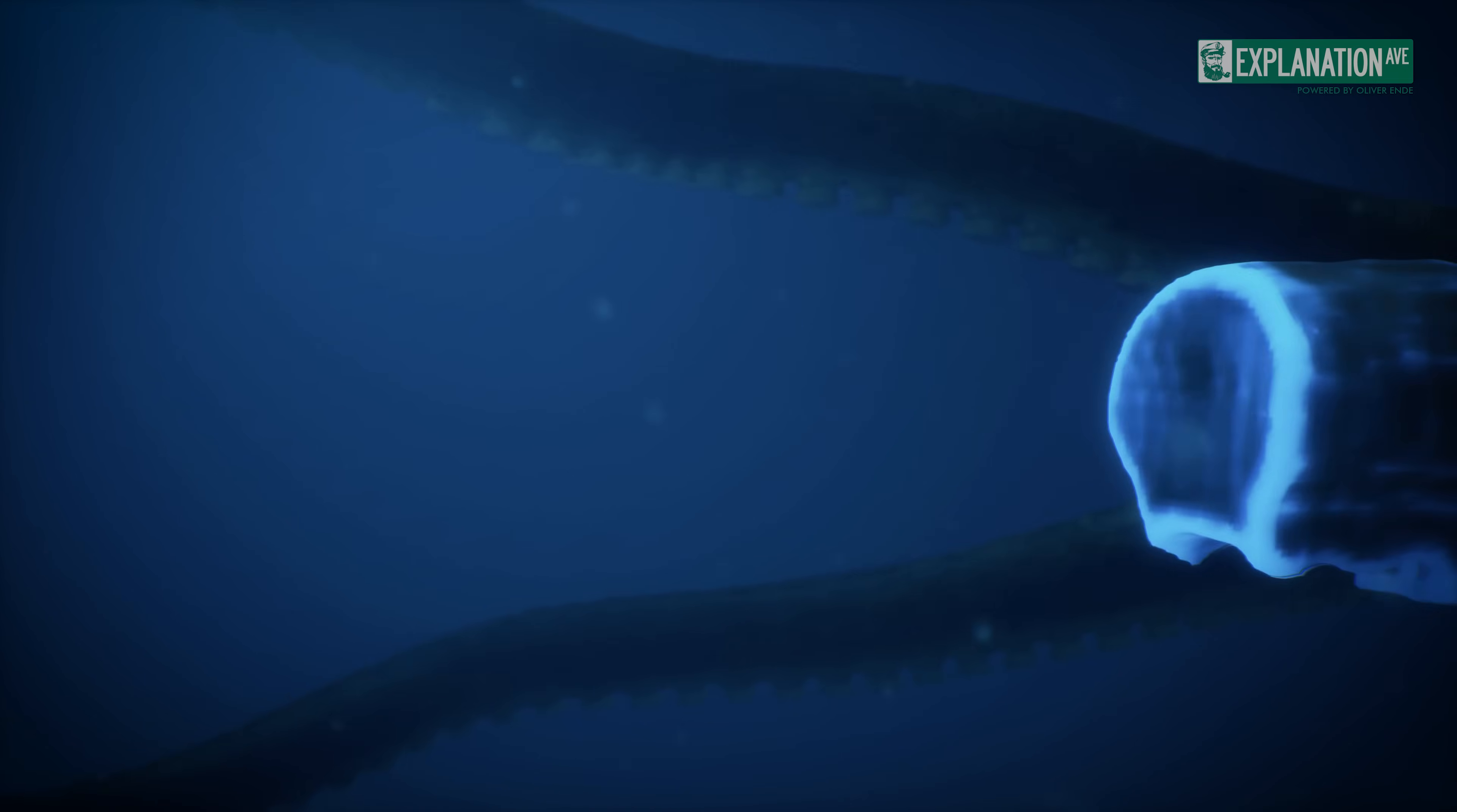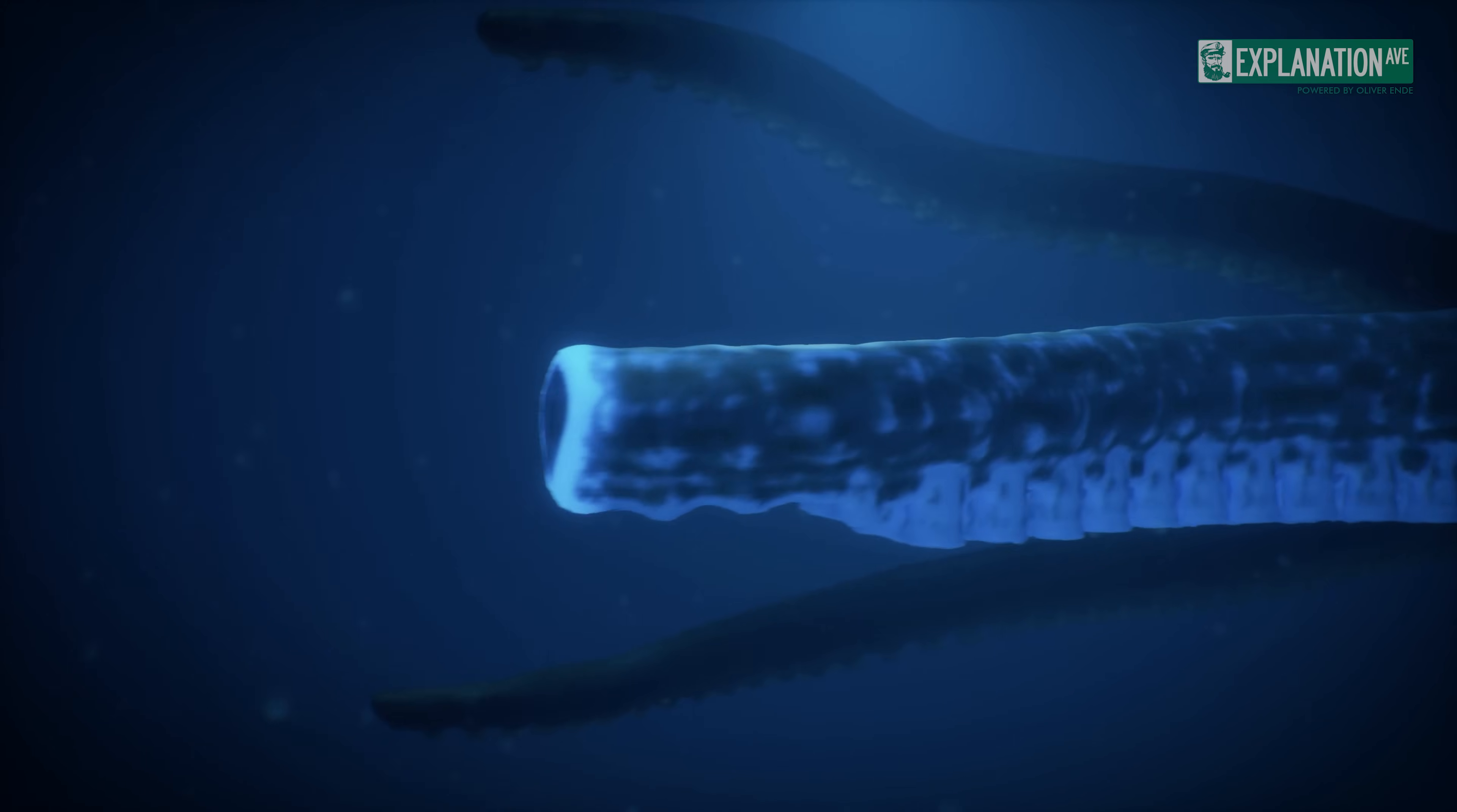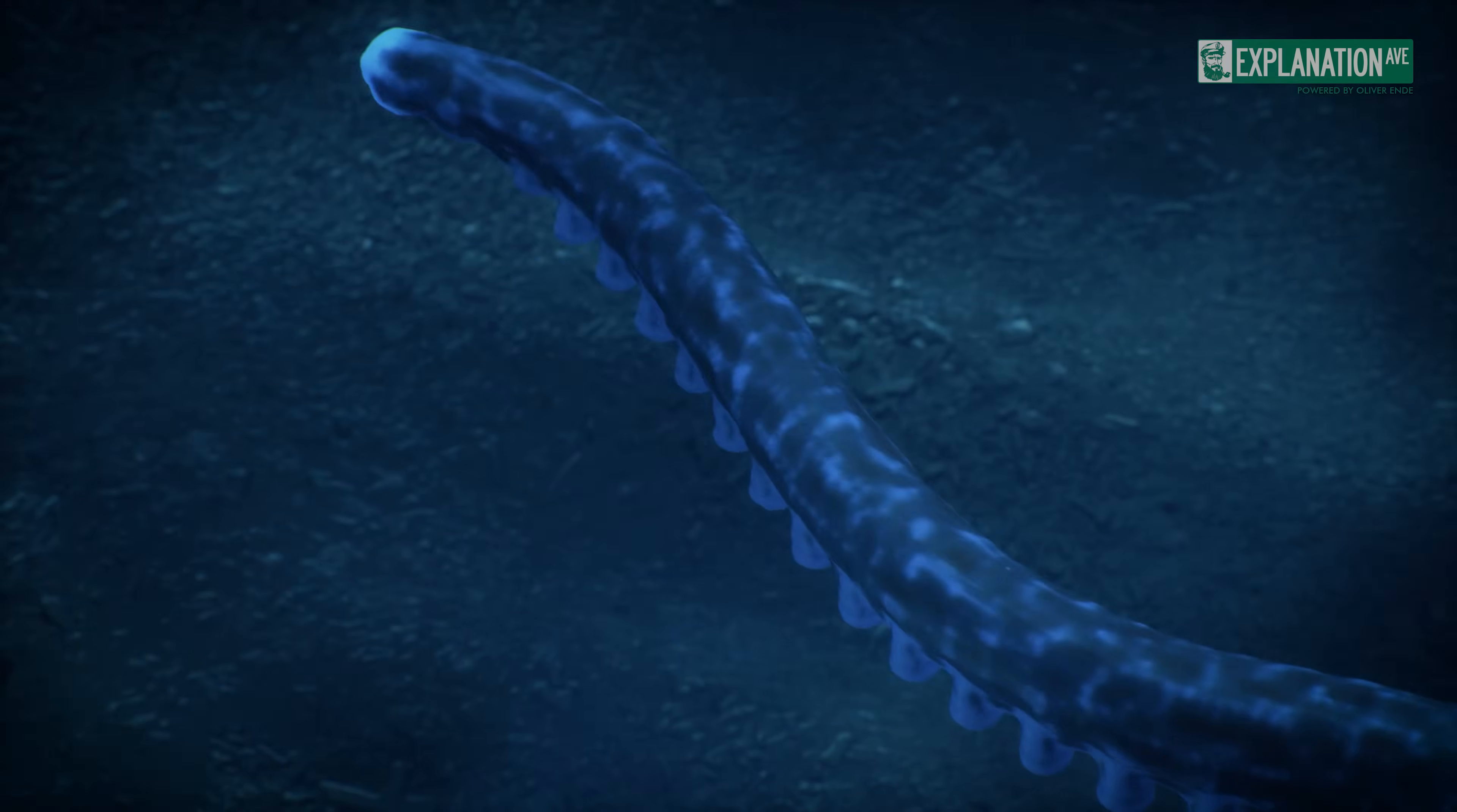The ability of the octopus to regenerate its arms and tentacles is a well-known phenomenon that has been known since Aristotle's time. In a process called regeneration, specialized cells begin to grow and develop into a new arm – a process that can take several weeks or even months.